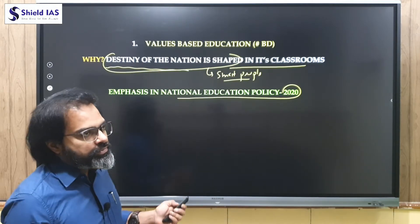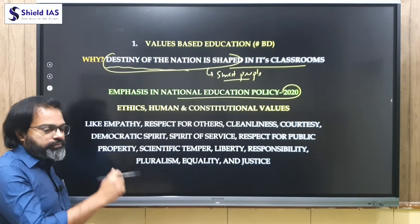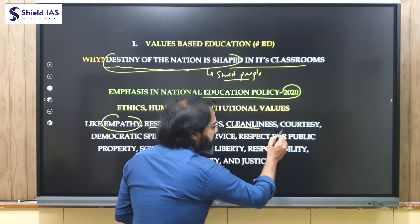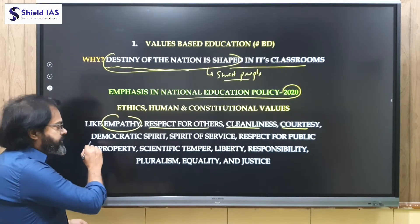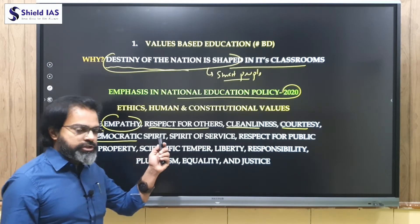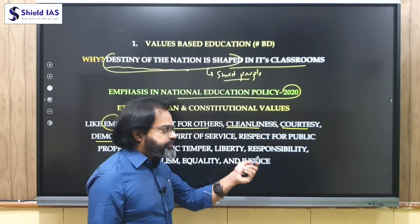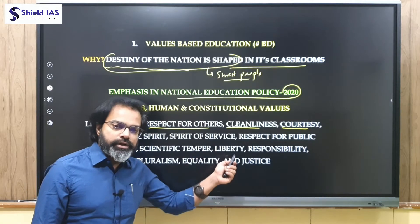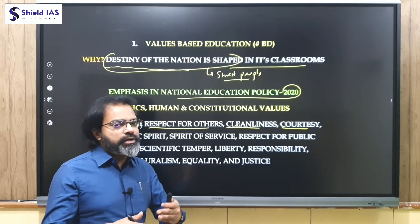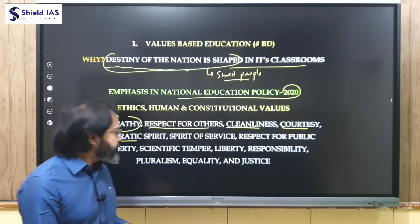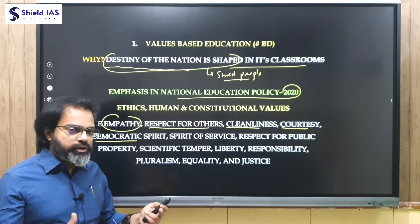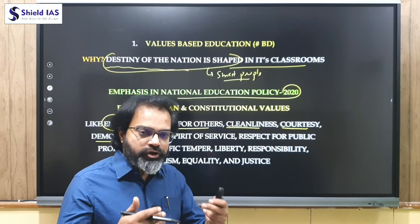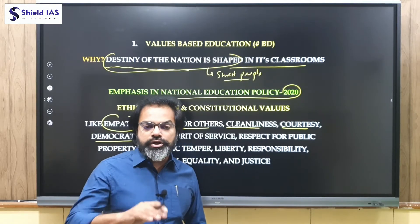NEP 2020 focuses on ethics, human and constitutional values — for example: empathy and concern for others, respect for others, cleanliness, courtesy and politeness, democratic spirit meaning a more inclusive and participative approach, spirit of service for the community and nation, respect for public property, scientific temper based on logic and rationality, liberty of thought and expression, responsibility, pluralism and acceptance of diversity, and equality of status and opportunity and justice — social, political, and economic — extended to all. All these values are required to be nurtured to create smart people.